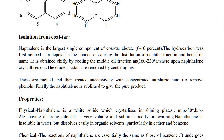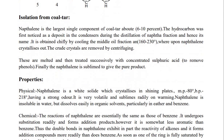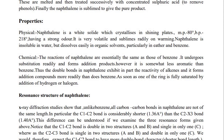Naphthalene is obtained chiefly by cooling the middle oil fractions at 160 to 230 degrees Celsius, whereupon naphthalene crystallizes out. The crude crystals are removed by centrifuge, melted, and then treated successively with concentrated sulfuric acid to remove the phenols. Finally, the naphthalene is sublimed to give the pure product.